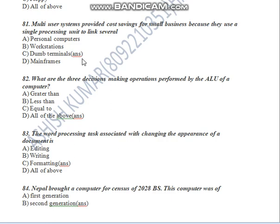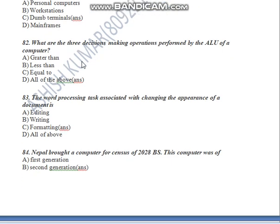Question Number 81: Multi-user systems provide cost savings for small businesses because they use a single processing unit to link several dumb terminals. Which terminals have connectivity?